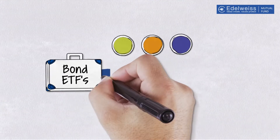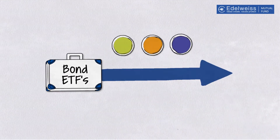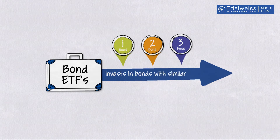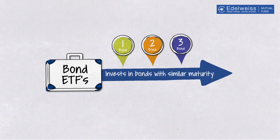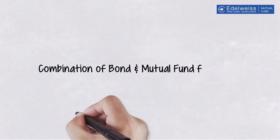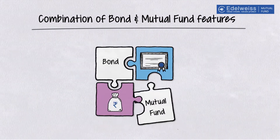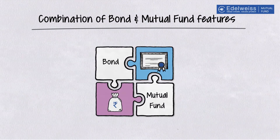Target Maturity Bond ETFs have a defined maturity and invest in bonds that mature on or before the maturity of the scheme. This enables them to combine features of bonds and mutual funds both.